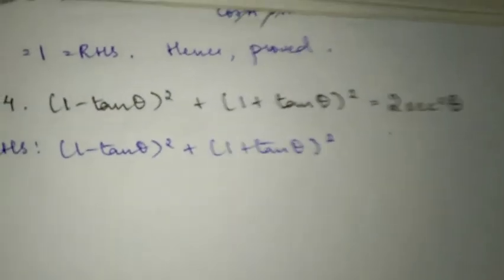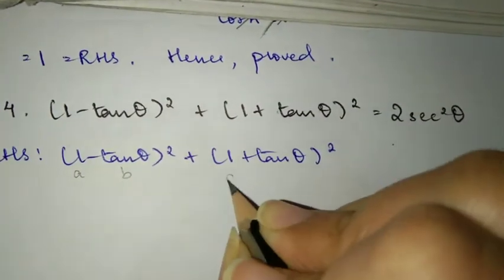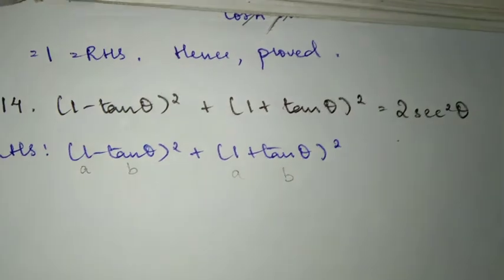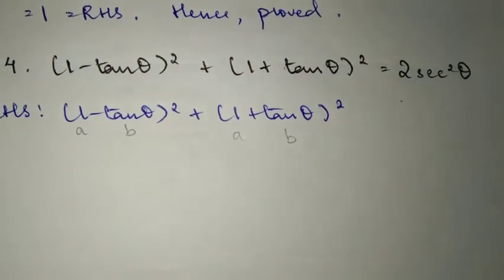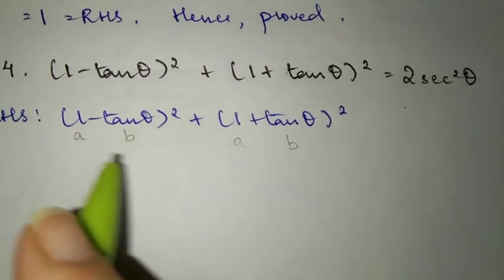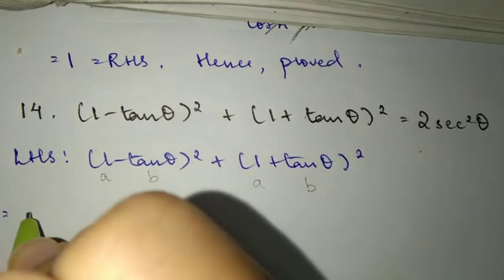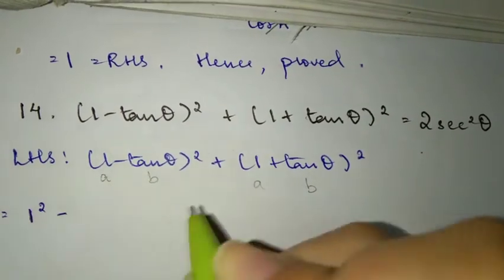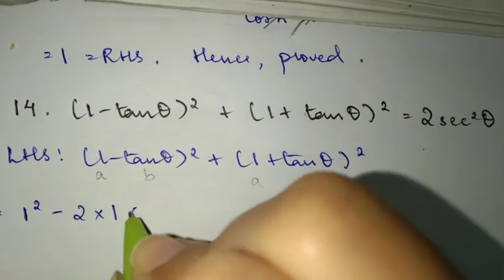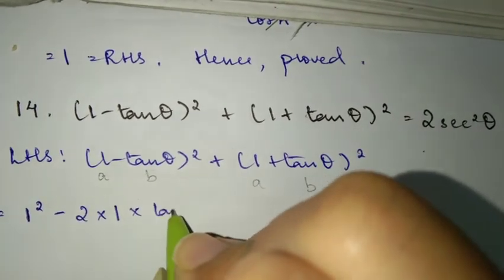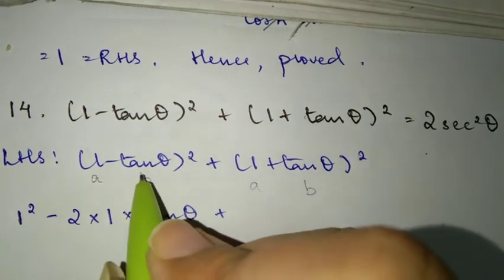Question 14: we have (1 minus tan theta) whole square plus (1 plus tan theta) whole square. Expanding (a minus b) whole square gives a square minus 2ab plus b square. So substituting a equals 1 and b equals tan theta: 1 square minus 2 into 1 into tan theta plus tan square theta.